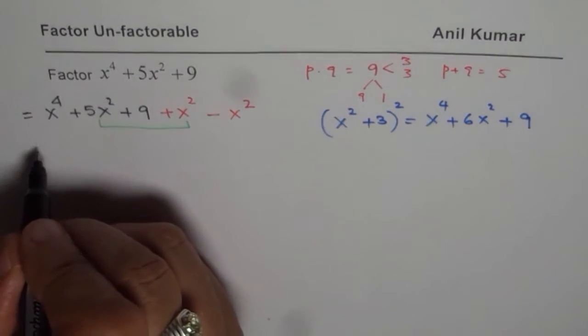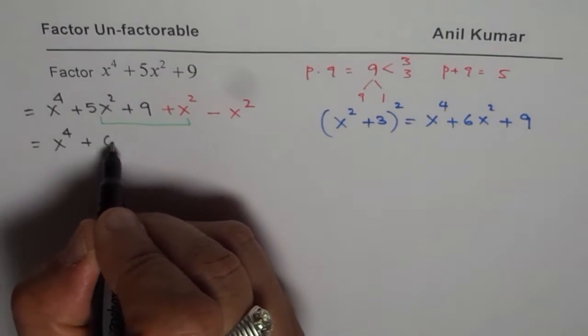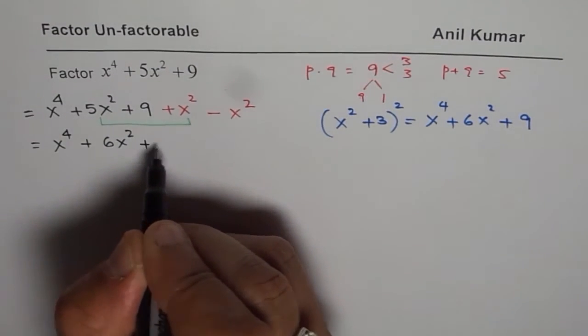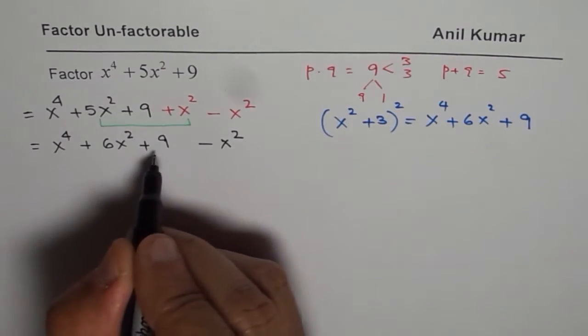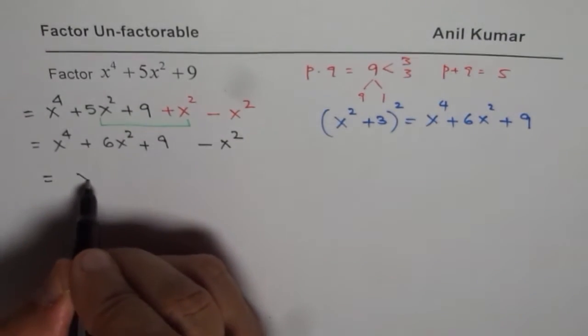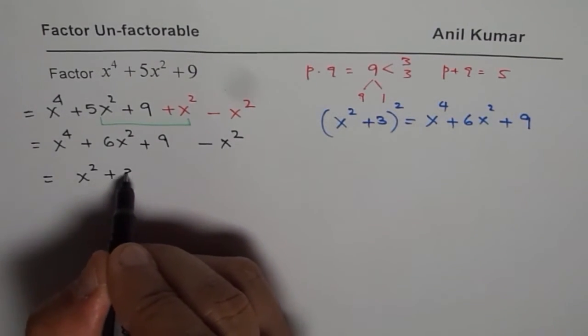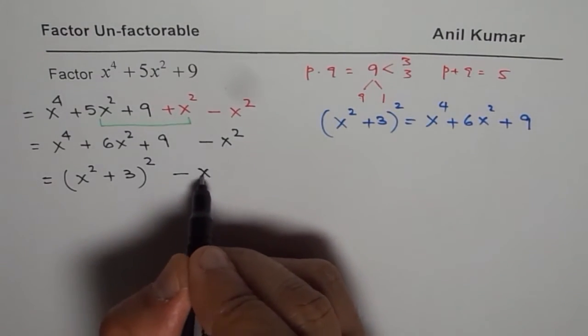So what we get here is actually x to the power of 4 plus 6x squared plus 9 minus x squared. Now these three terms as you can see can be written as x squared plus 3 whole squared, minus x squared.